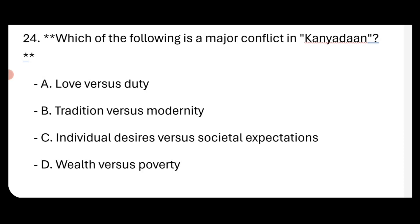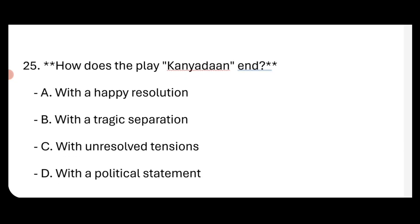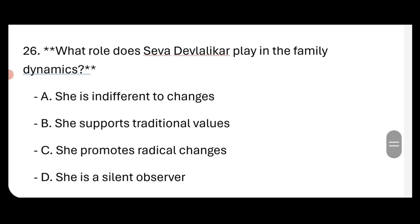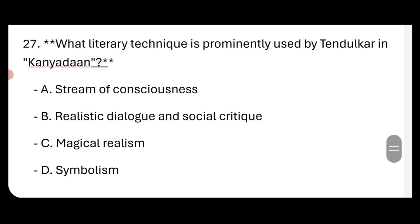What is a major conflict in Kanyadaan? How does the play Kanyadaan end? It ended with undissolved tensions. What role does Seva Devlalikar play in the family dynamics? She supports traditional values. What literary technique is prominently used by Tendulkar in Kanyadaan? Realistic dialogue and social critique.